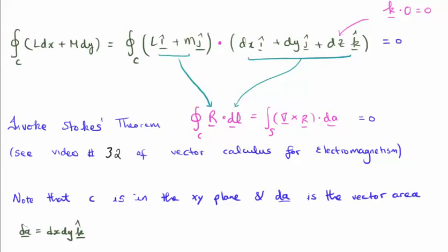Note that the curve C is in the xy plane and that dA is the vector area. So dA, the scalar dA is just the area. The vector dA is the scalar area but with a direction perpendicular to the surface of the area. So say for example if you had the scalar area dA here, it would be equal to dx dy, but the vector area is going to be equal to dx dy k hat.